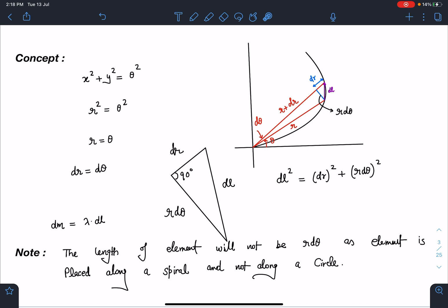Please write in the comment section if you have committed this mistake, or if you are careful about this and you knew about spirals that we cannot take length of element as r·dθ. Please let me know in the comment section.